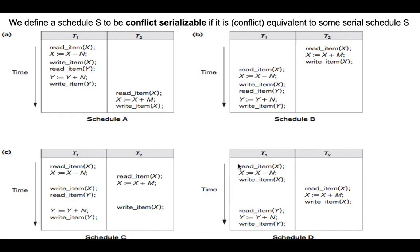Let's identify the next conflicting operation. Write X in T2 conflicts with write X in T1 because they belong to different transactions, access the same data item, and both are writes. We check schedule A: T1 write X occurs first, followed by T2 write X — the same order is maintained in schedule A as well.